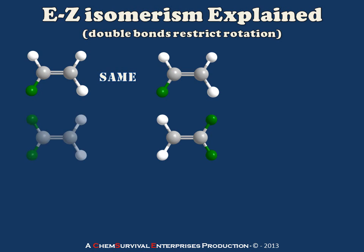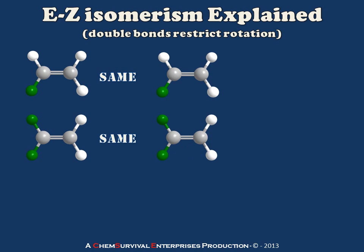If I go one level up in complexity and add two green substituents and two whites, again I can draw what may look like a different set of isomers here. But in truth, all I have to do is rotate the molecule on the right and I've recreated the exact same molecule as on the left. So these don't have E-Z isomerism.